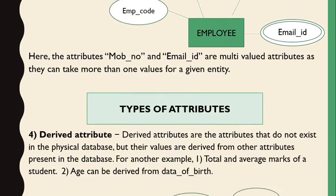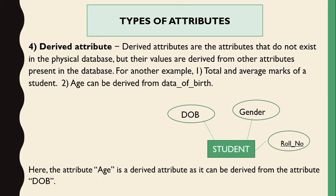The next type is derived attributes. Derived attributes are those that do not exist in a physical database but are derived from other existing attributes. For example, total marks and percentage are calculated by adding multiple subjects to form the total and average. Similarly, age can be derived from the date of birth. Such attributes are derived attributes.